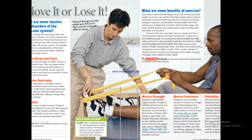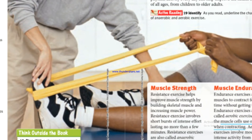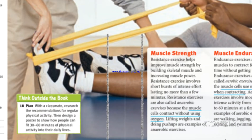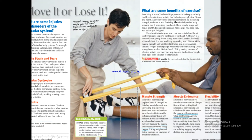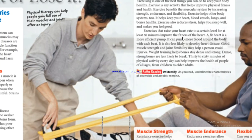Muscle cells contract without using oxygen — that is anaerobic, which is resistance. Muscle endurance is aerobic. Exercise that raises your heart rate to a certain level for at least 60 minutes improves heart fitness. A fit heart is a more efficient pump — it pumps more blood with each beat and is less likely to develop heart disease. Good muscle strength and joint flexibility help a person avoid injuries, and weight training helps bones stay dense and strong, so they are less likely to break.